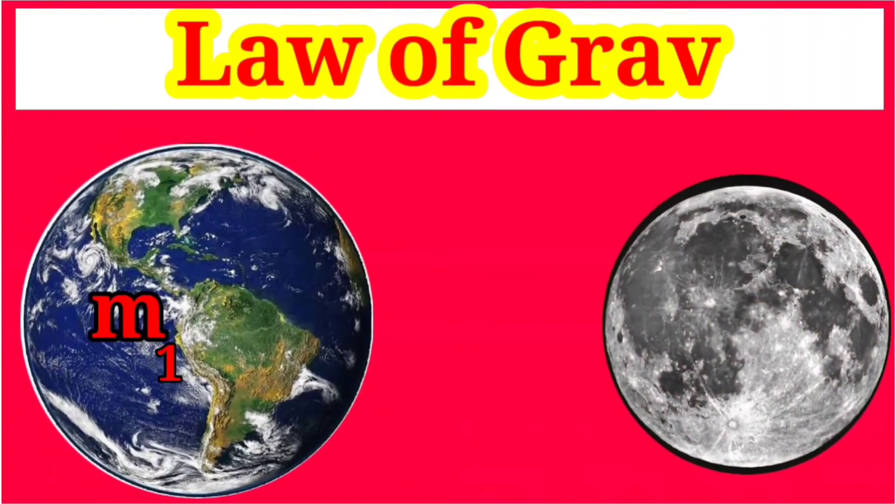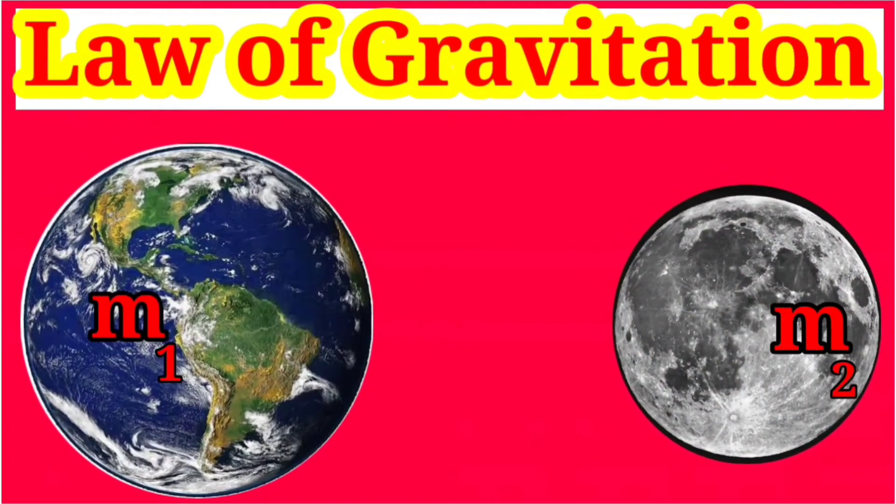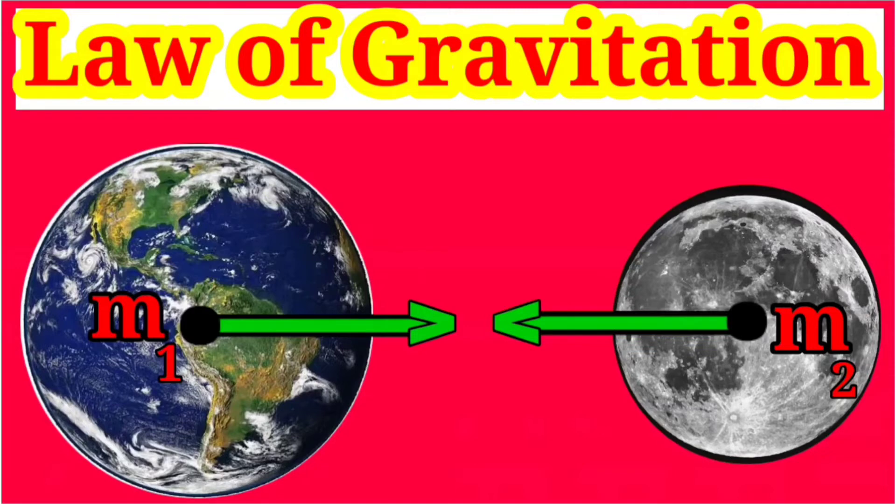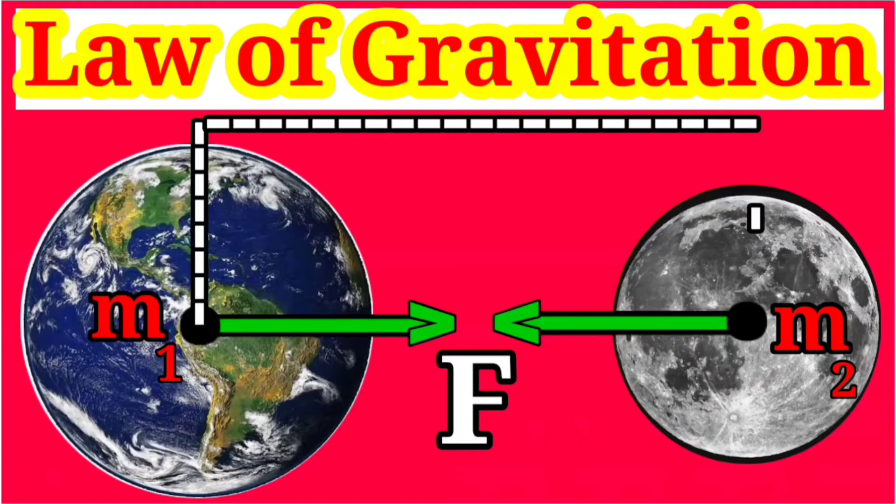Consider two bodies of masses M1 and M2. Both bodies affect each other with a force F. Body M1 applies force on M2 and M2 applies force on M1. This is according to Newton's third law of motion.